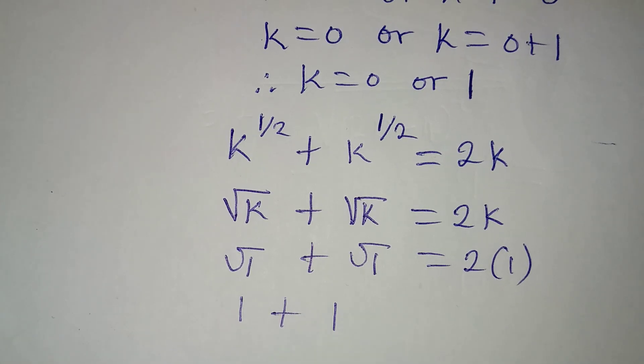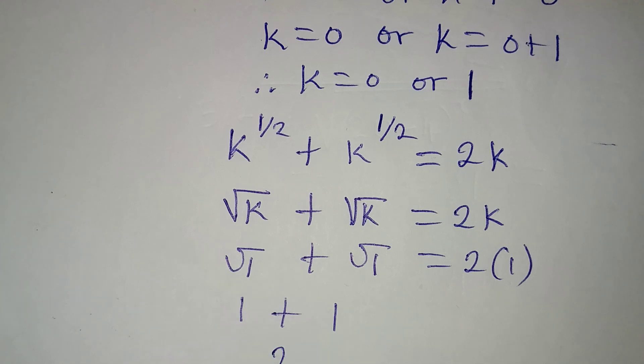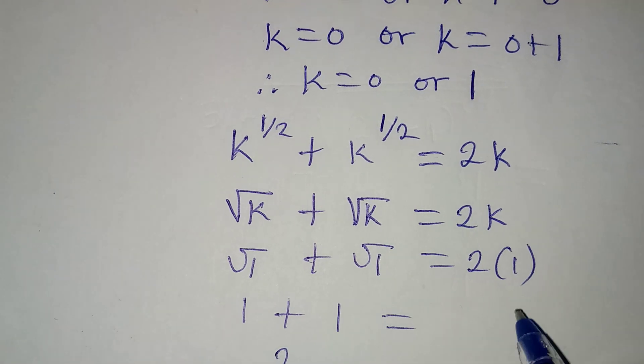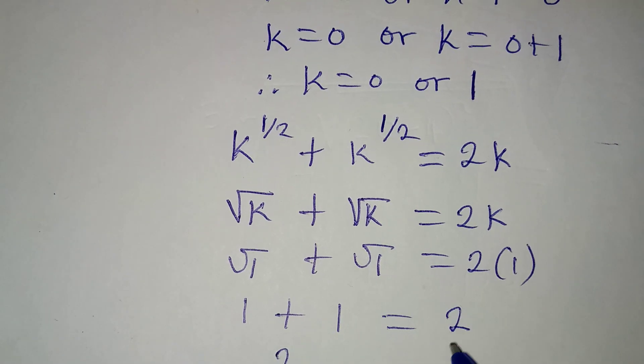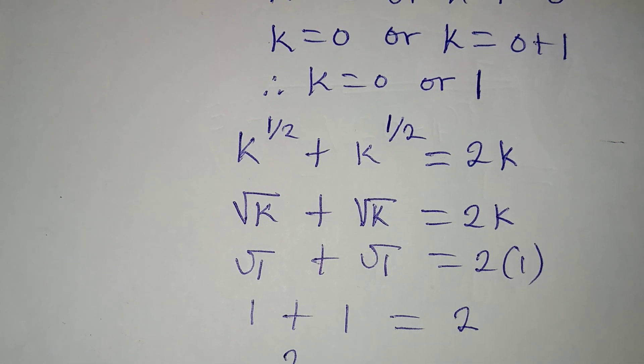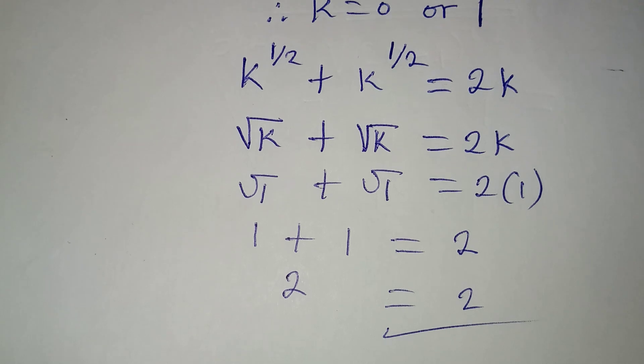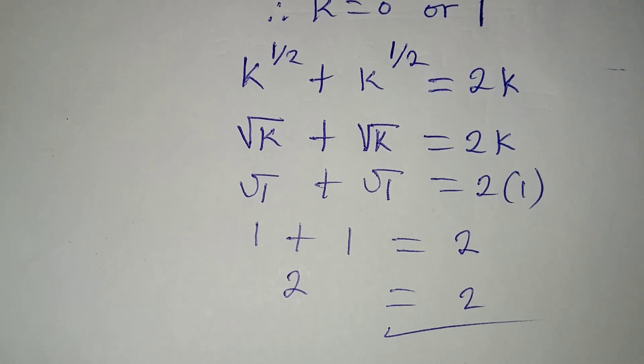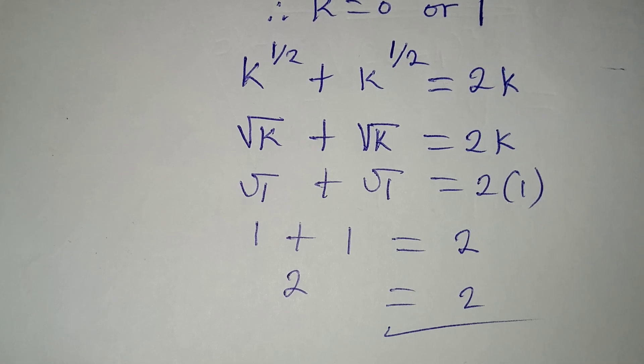Plus square root of one is one - on this side I'm going to have two, then on this side two times one is two, and then it is two. Meaning that we are very correct, we are very correct knowing that k is equal to zero or one. Thank you for watching.